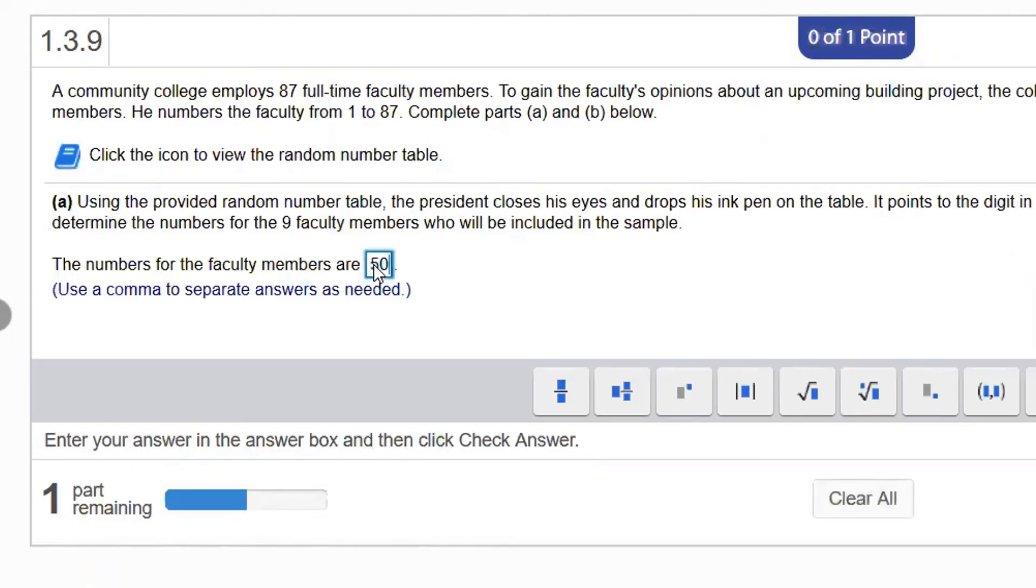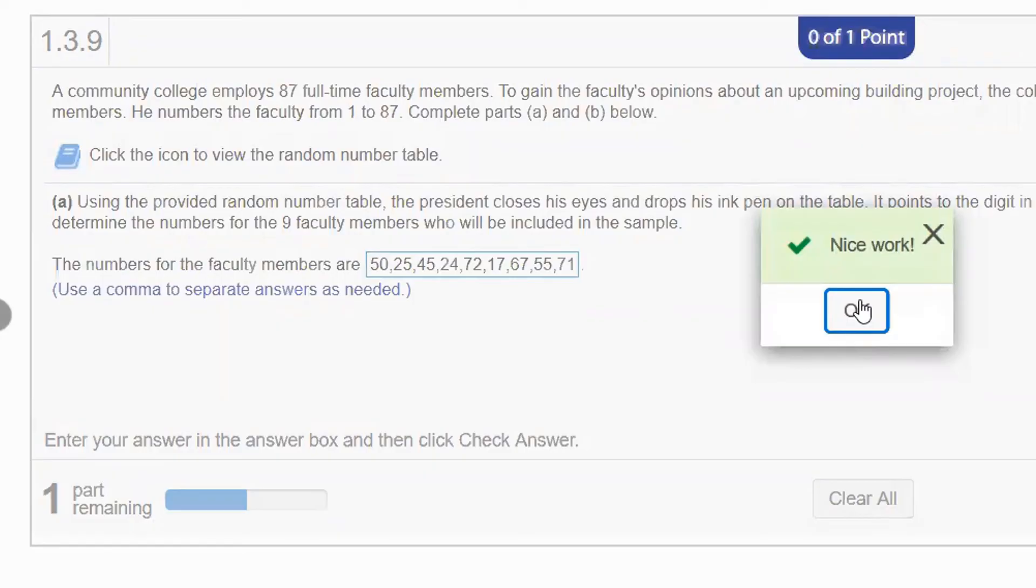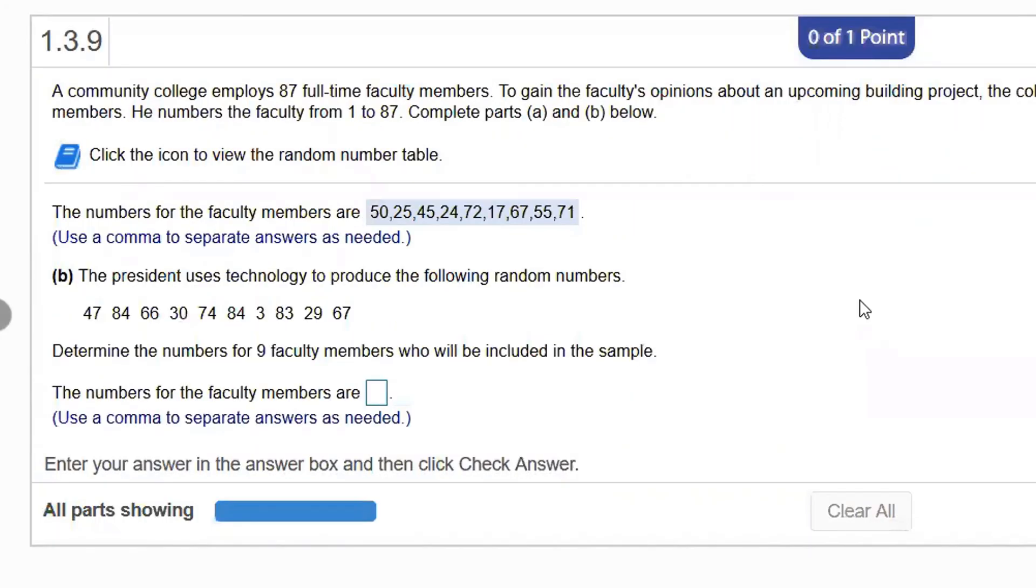So for me, that was 50, 25, 45, 24, 72, 17, 67, 55, and 71. Again, I type commas between them. Sometimes students type periods, and it'll mark it wrong, and it'll sure look like it's right. Also, I didn't type any spaces between them. I think you can if you want to, but it's not necessary. Check my answer. I get some praise, like nice work. And then it's on to part B.